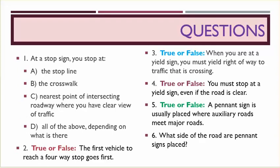Number one, at a stop sign you stop at A: the stop line, B: the crosswalk, C: the nearest point of intersecting roadway where you have clear view of traffic, D: all of the above depending on what is there. Number two, true or false, the first vehicle to reach a four-way stop goes first.